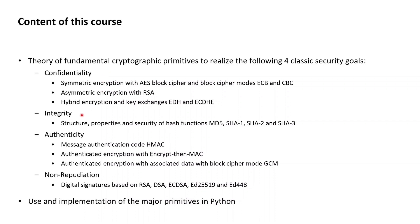For integrity we will get to know the structure, properties, and security of cryptographic hash functions, with a closer look at four of the most widespread: MD5, SHA1, SHA2, and SHA3. Going into authenticity, we will get to know message authentication codes with HMAC, authenticated encryption with the encrypt-then-MAC approach, and authenticated encryption with associated data using the GCM block cipher mode of operation.